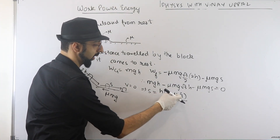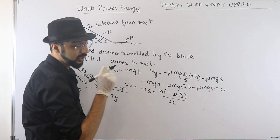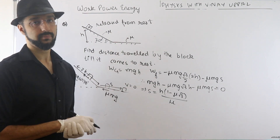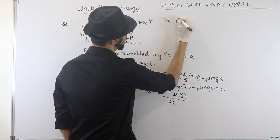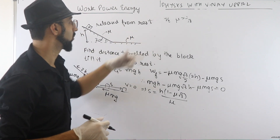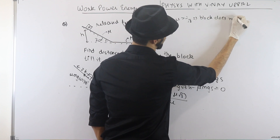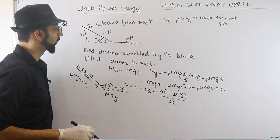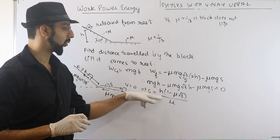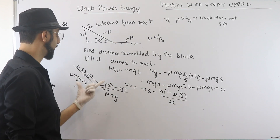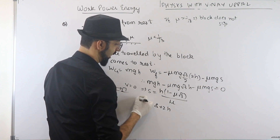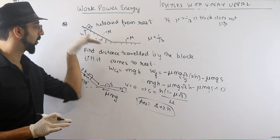Note: S could be negative if μ > 1/√3, which means the block wouldn't even slide down the incline. So we're obviously dealing with μ < 1/√3, and S is positive as expected. The total distance traveled is S + 2h, which you can add up yourself. The key is to carefully calculate work done by friction on each portion.